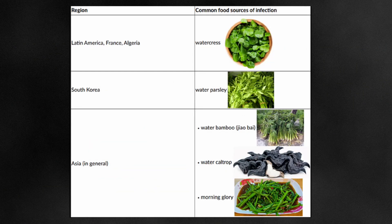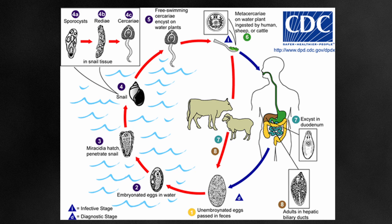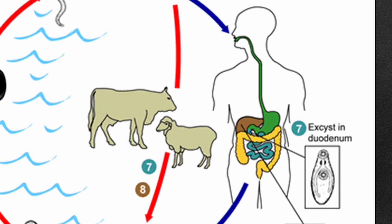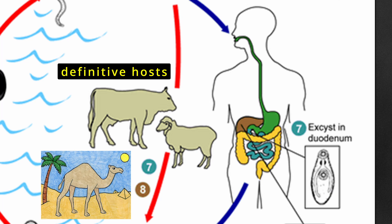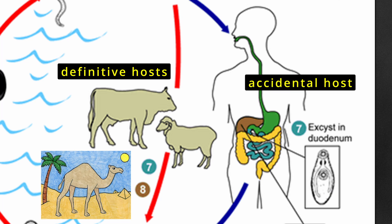The most common freshwater plants associated with liver flukes include watercress in Western countries, water parsley in South Korea, and water bamboo, water caltrop, and morning glory in most endemic Asian countries. In addition to humans, Fasciola undergoes its complete life cycle in cattle, sheep, and sometimes camels. These herbivorous livestock are the primary definitive hosts of the parasite, while humans are considered accidental hosts since they typically do not play a significant role in the parasite's transmission cycle.